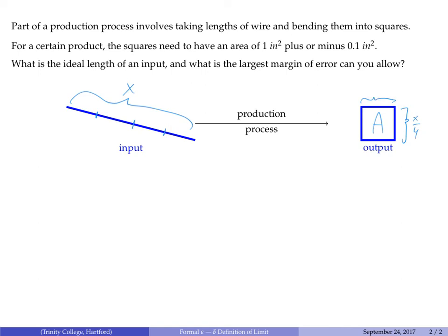We take the length x and split it into four equal parts that become the sides of our square. So the area is really just a function of x—it's the side length squared: (x/4)² = x²/16. That is a familiar function.